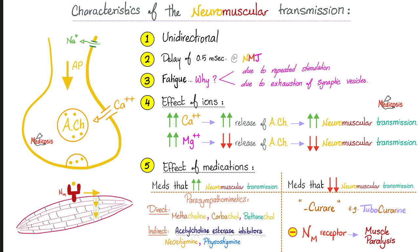Characteristics of the synapse: unidirectional delay — because this is a synapse, there is a gap, so there is some kind of a delay. With repeated stimulation, the synapse gets fatigued. If you have more calcium, you'll have more rupturing of more vesicles, and therefore you increase the release and increase neuromuscular transmission. There is another cation that opposes calcium — magnesium.